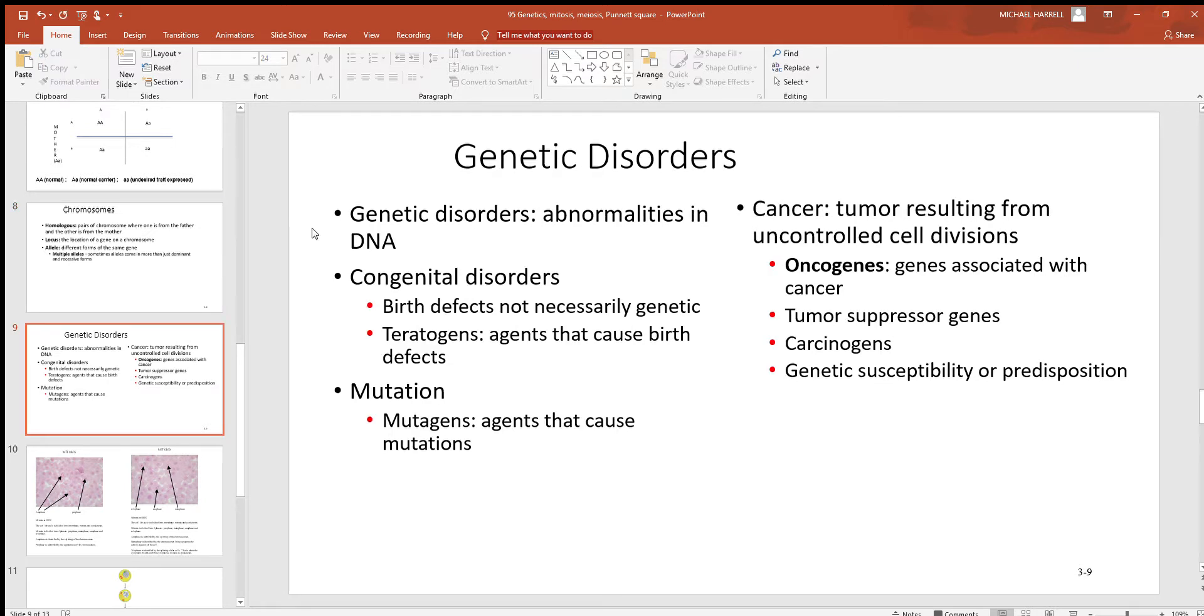Let's mention genetic disorders. You could talk about abnormalities in DNA. If something goes wrong with the DNA it often causes a problem. Mutations in DNA often are not good, they are usually bad. These genetic disorders could be congenital, present at the time of birth. Birth defects aren't necessarily genetic. Teratogens are agents that cause birth defects, especially foreign chemicals. That's why pregnant females often want to avoid any type of foreign chemical or medications. A mutagen is any agent that causes a mutation in the genes.